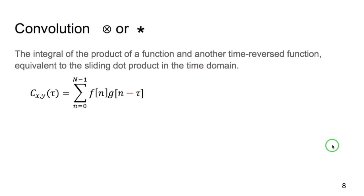Finally, we have convolution, which is denoted with a circle with an x through it, or also an asterisk. So this is very similar to the cross-correlation, but one of the signals is time reversed. And that's denoted by subtracting tau rather than adding it.